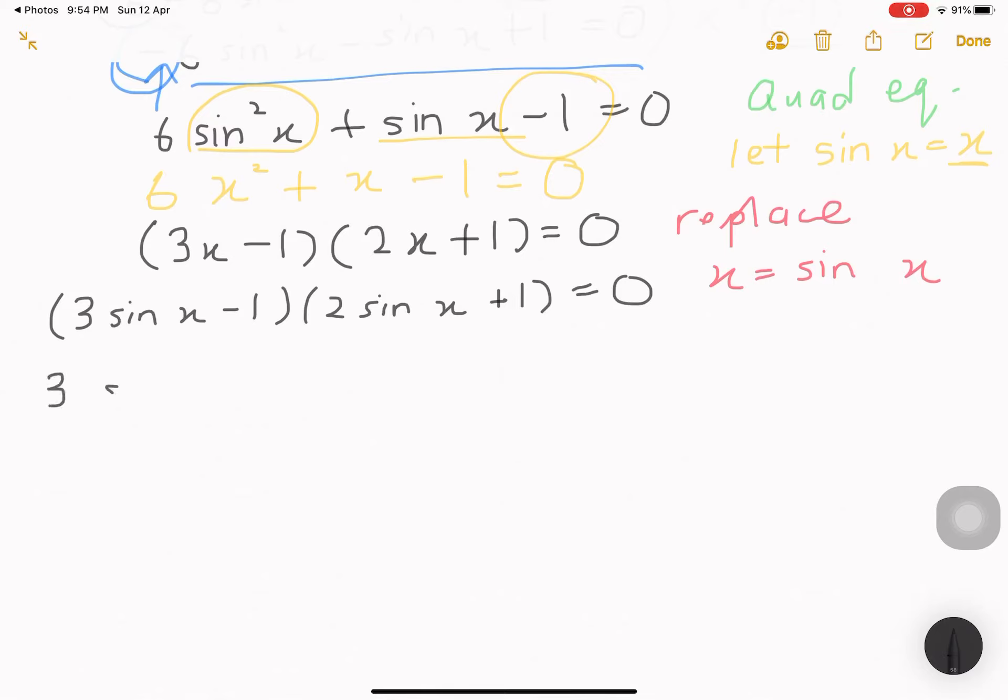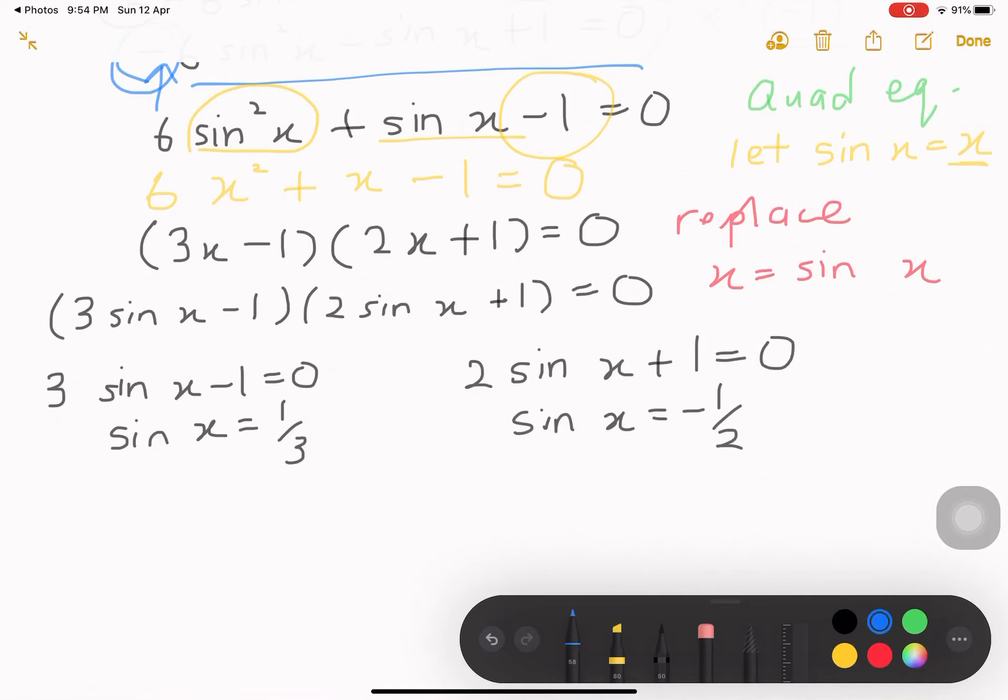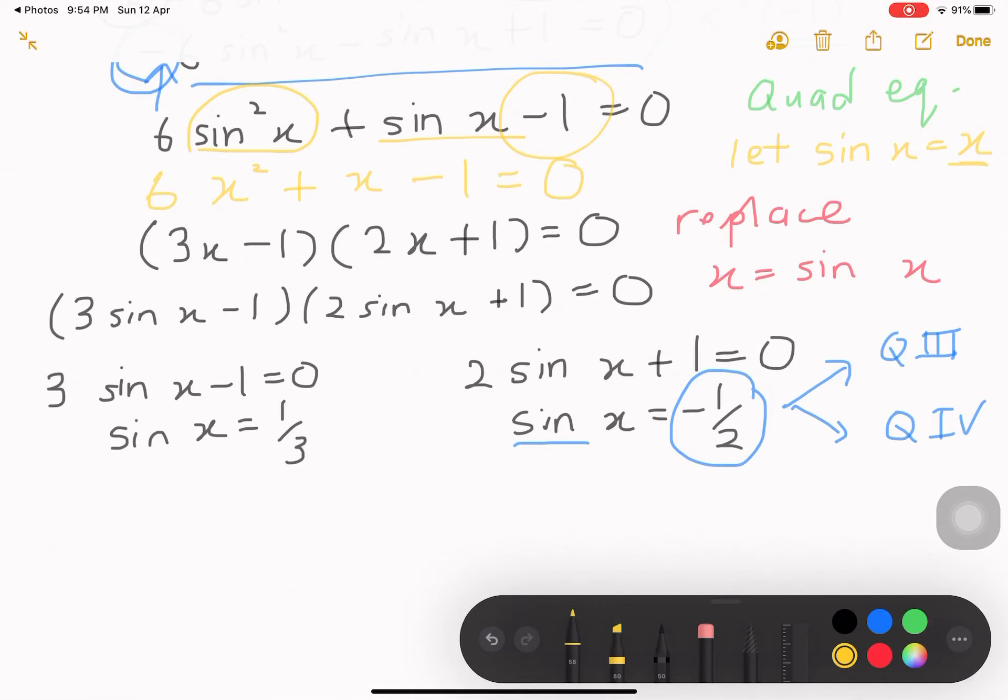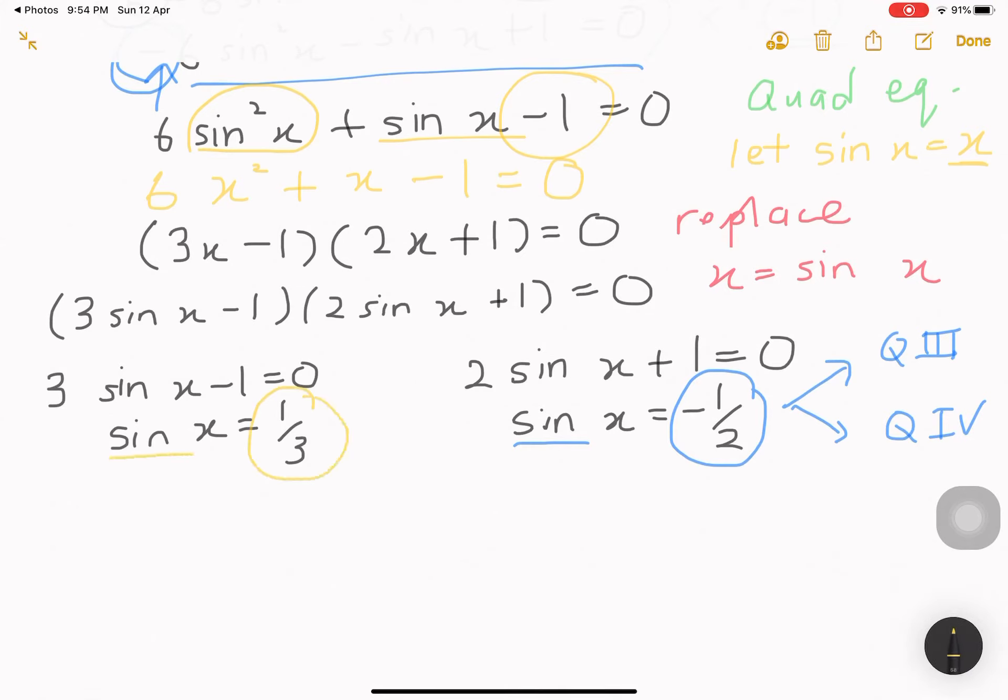One is by taking 3 sin x minus 1 equals to 0, and another one by taking 2 sin x plus 1 equals to 0. Now, to solve this, we have done this before in class. This is super easy. I know you know how to solve this, negative 1 over 2. Looking at this, we know that negative 1 over 2 for sin, it should be at quadrant 3 and quadrant 4. And another one is, if you see that this is positive, and it is sin, the value will be in quadrant 1 and quadrant 2.